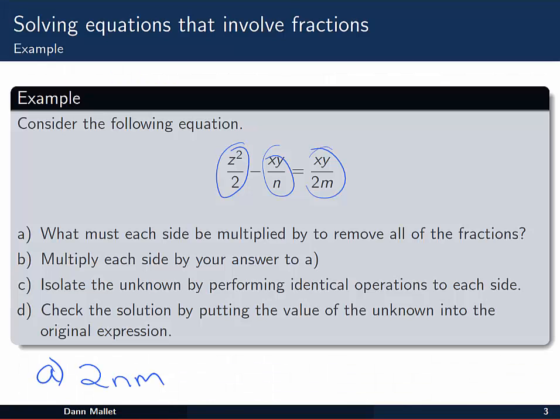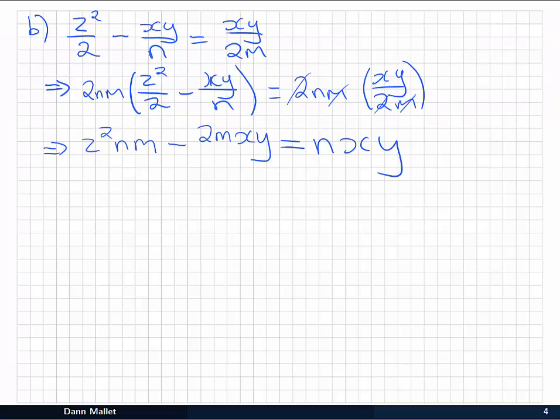Part c says to isolate the unknown by performing identical operations to each side. Well, there's actually a lot of letters in this equation, but I'm going to go with the usual variable that we find to be the unknown, as x. You could try this out yourself using any of the letters to be the one to rearrange for. You can try that out later. But for now, let's work with x. We can see that x appears in two of the terms, here and here. So I'm going to try to get those all on the one side by bringing this term over here, and moving everything else, this term, over to the right hand side.